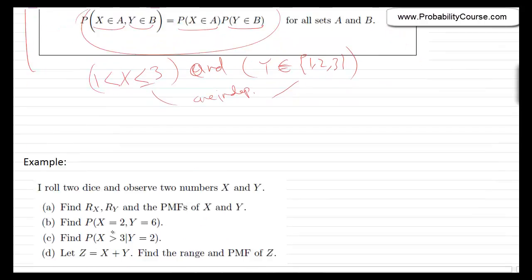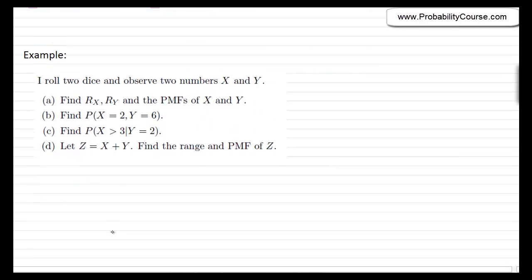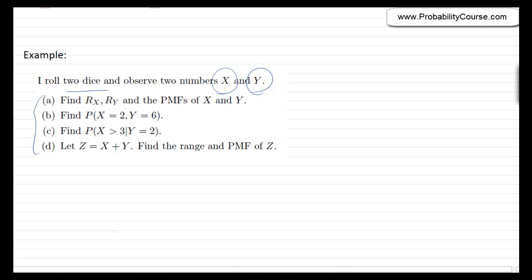Let's look at another example. I roll two dice and observe two numbers, x and y. x can be 1 through 6, and y can be 1 through 6. There are several questions to answer, and I suggest you solve them before watching the rest of the video.